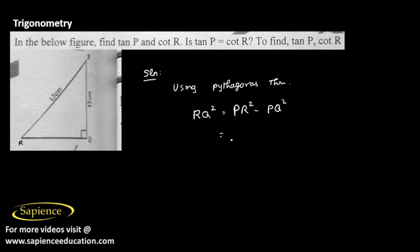It is given PR as 13, so 13 square minus 12 square. 13 square is 169, 12 square is 144, so RQ square is equal to 25, which means RQ will be equal to 5. Square root of 25 is 5, so we just found the third side.